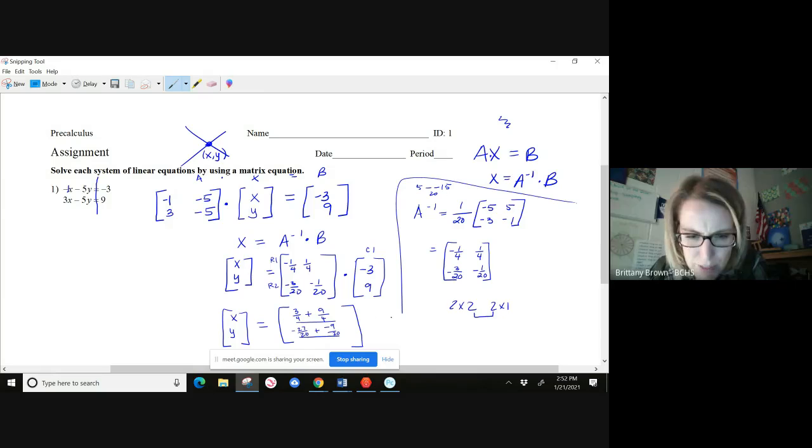All right, so let's see what's going to happen here. That doesn't seem right, does it? No, it's because it's not. Oh, Ms. Brown, let's erase. What did I do wrong? All right, let's see. I didn't multiply that row by that row, did I? All right, so I've got to do